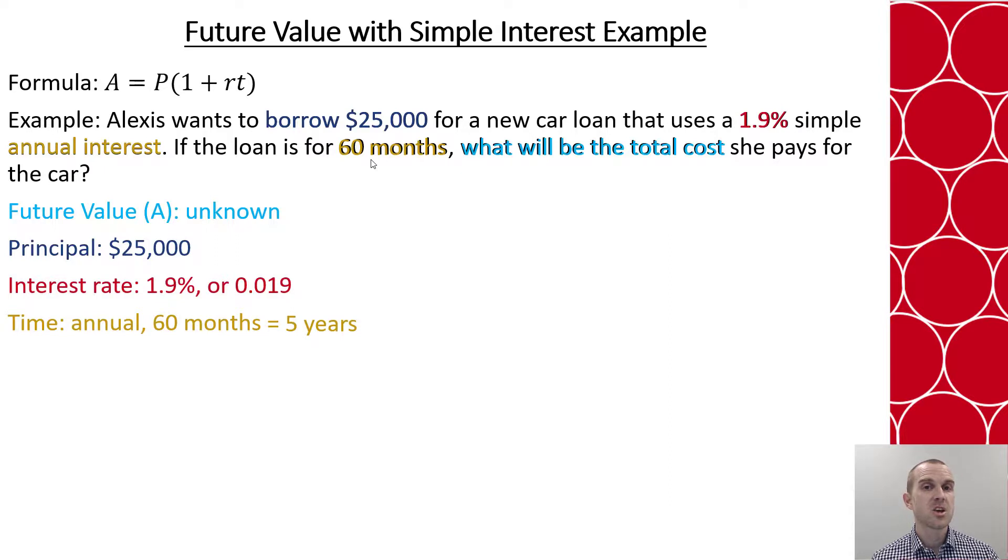If you're unsure, you can always just start to think through it logically too. 12 months in 1 year, 24 months in 2 years, and just keep going until you get to what you need. So now I have my values and I know what I'm solving for. I can substitute them in and go from there.